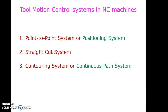Next is tool motion control systems. We can control the tool independently in NC machines. What we are going to study deals only with tool motion control — there are three different control systems for tool motion.